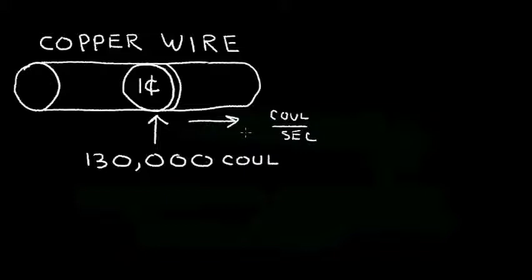Okay, so I'm assuming you solved the problem, and let's see how that was done. If we have 130,000 coulombs that must pass the surface of the penny, and we're only moving a coulomb each second, it's going to take 130,000 seconds for the charge in the penny to pass the surface of the penny.